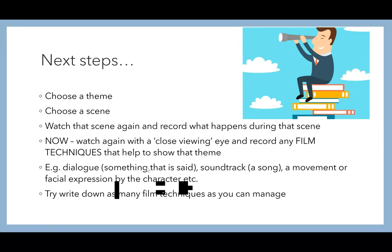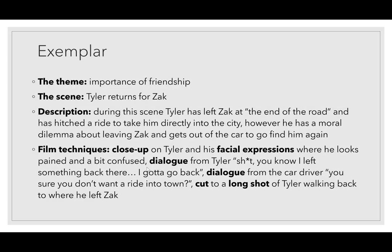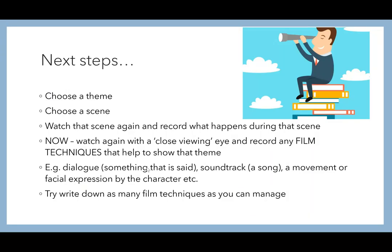Pause this video, go back, watch the scene again, record what happens and record the film techniques. Here's my exemplar — I did it on the importance of friendship, on the scene where Tyler returns to Zach. My description: during the scene, Tyler has left Zach at the end of the road and hitched a ride into the city. However, he has a moral dilemma about leaving Zach and gets out of the car to go find him again. My film techniques — in bold — are: a close up, facial expressions, dialogue, a cut, and a long shot. So: choose a theme, choose a scene, watch the scene, record what happens, and record the film techniques.